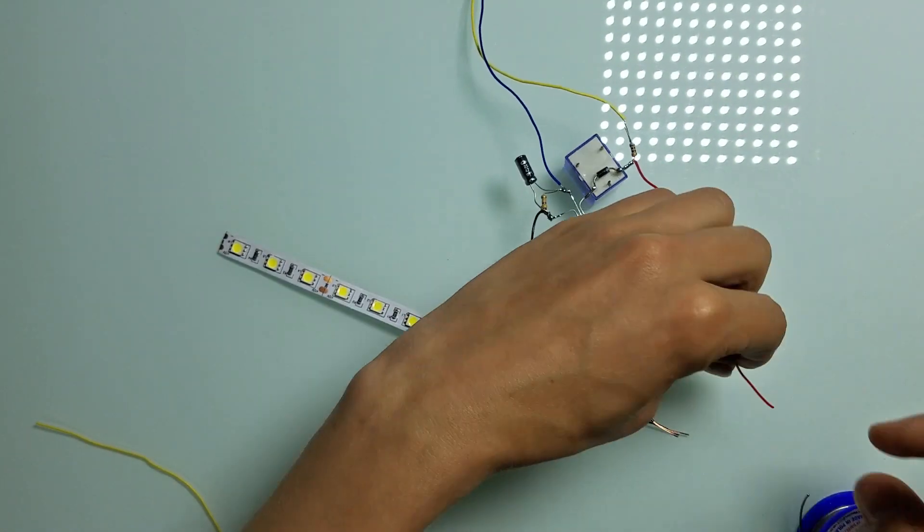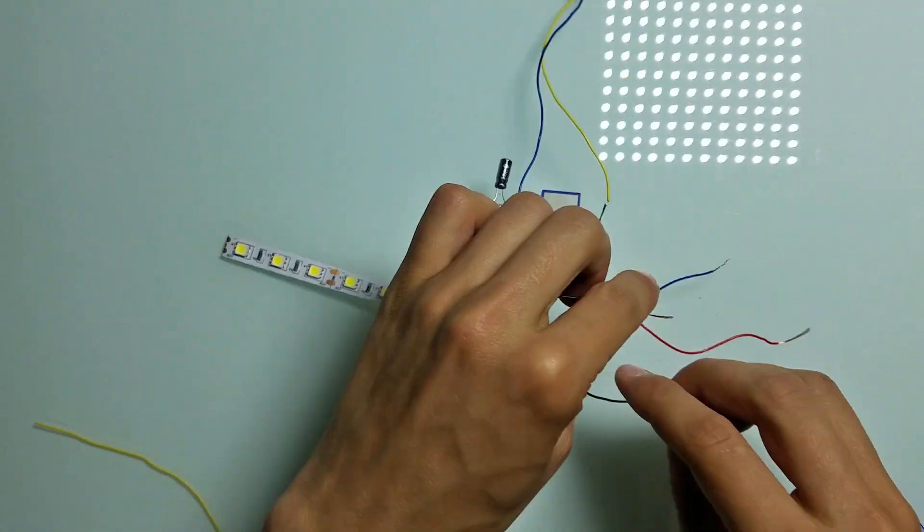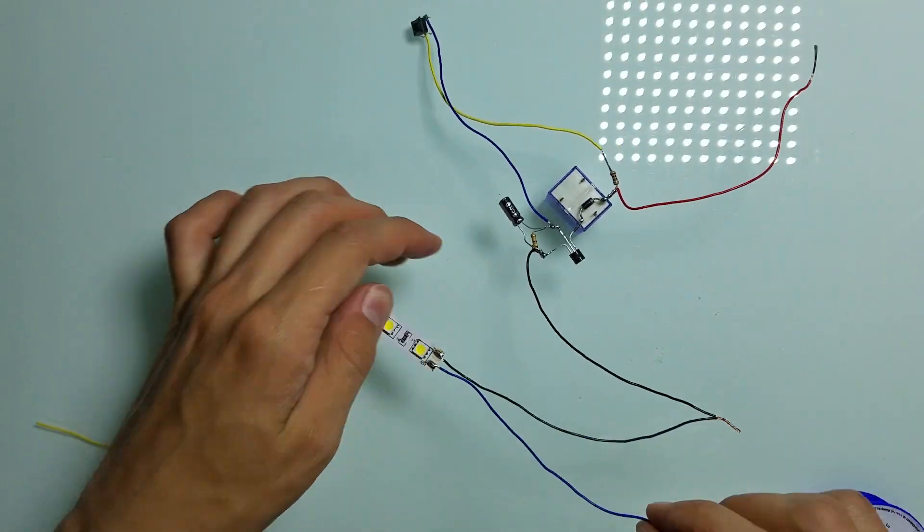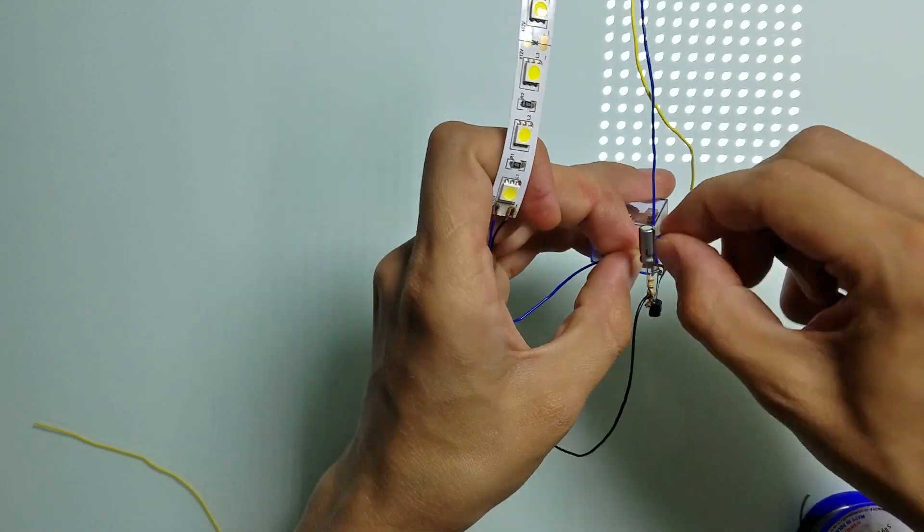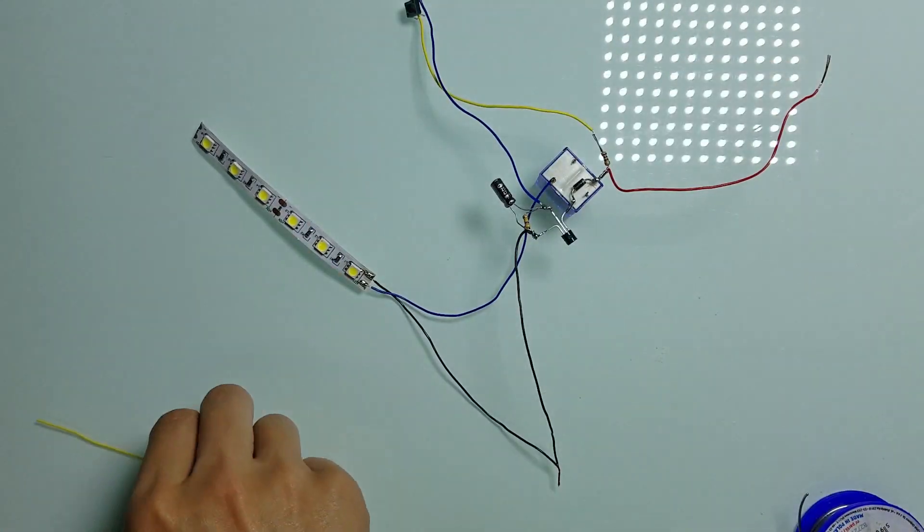Now let's connect the LED strip to the negative wire and to the normally open contacts.